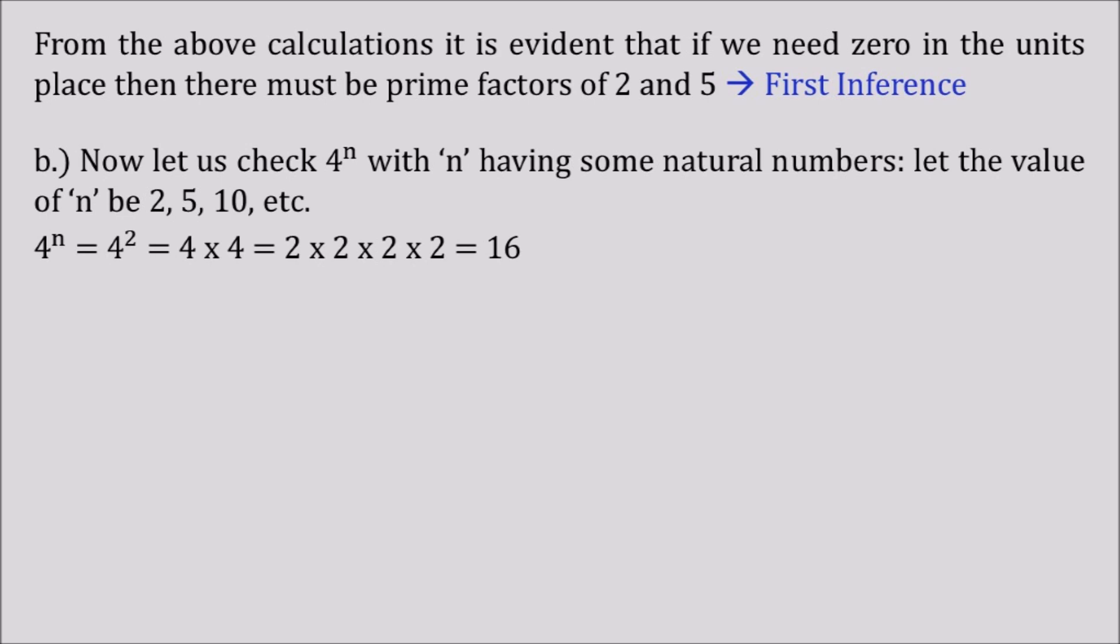Now 4^n when n = 2, so 4² = 4 × 4, and we can factorize further with the prime numbers: 2 × 2 × 2, which is nothing but 16.